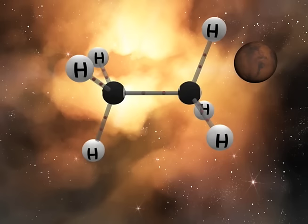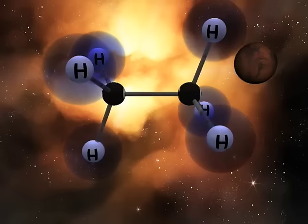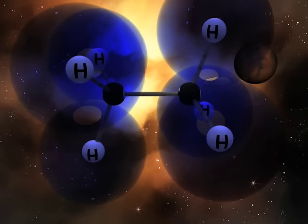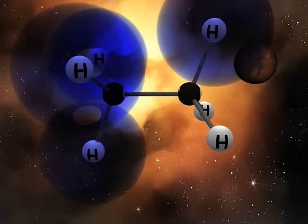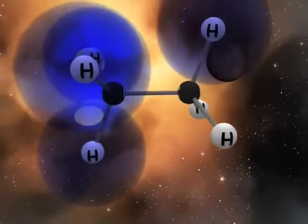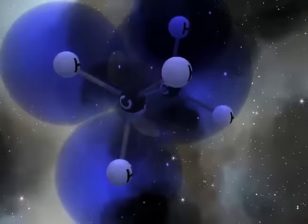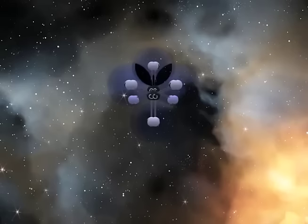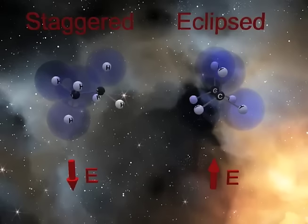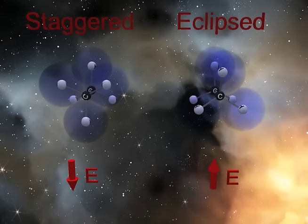Conformations are different arrangements of atoms due to these rotations. When we place the electron density around each hydrogen atom, we see that the hydrogen atoms from adjacent carbons do not touch. Even though the hydrogen atoms from adjacent carbons do not touch, there is torsional strain due to the electron clouds of the adjacent carbon-hydrogen bonds, which impedes the rotation about the C-C bond. This gives rise to the staggered and eclipsed conformations for ethane. The difference in relative energy between these two conformations is approximately three kilocalories per mole.